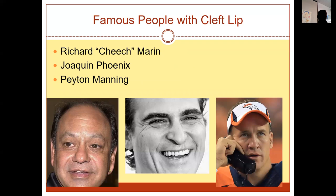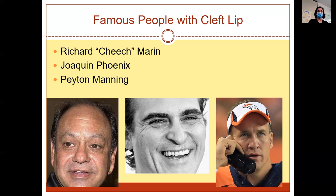Here are some famous males with cleft lips — you may or may not know them depending on how old you are or what shows you like. Who knows how severe, or if they actually involve the palate. You can see their scars a little bit, especially on Joaquin Phoenix — his is probably the most obvious. Cheech Marin and Peyton Manning also have them, though Peyton Manning's isn't very visible in that picture.